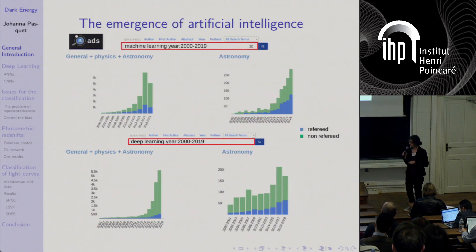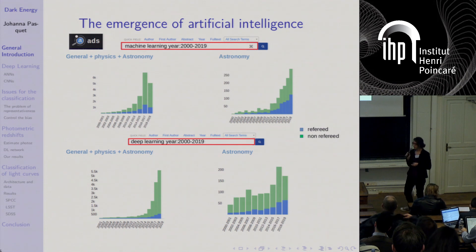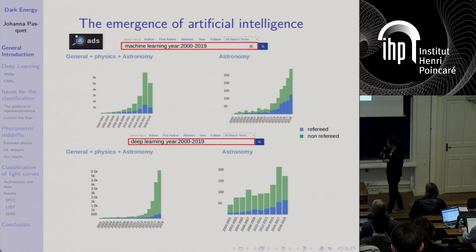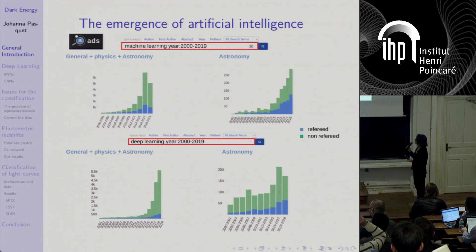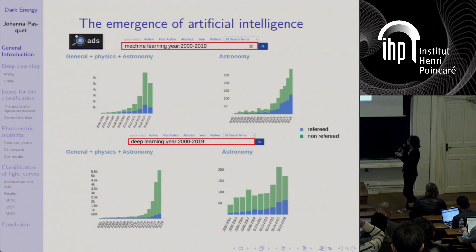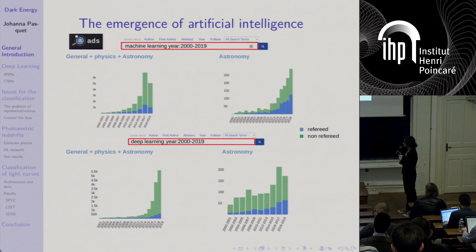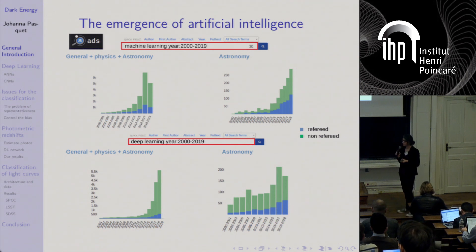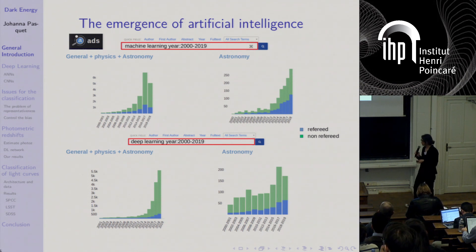In parallel there is the emergence of artificial intelligence. I made a request on ADS selecting papers containing the keyword 'machine learning' between 2000 and 2019. You can see the distribution of referred and non-referred papers, and there is a very large growth factor in recent years. The same behavior is observed for deep learning papers, though it is more recent.